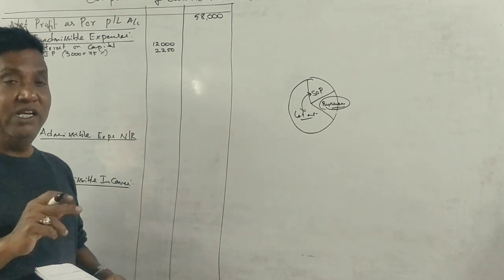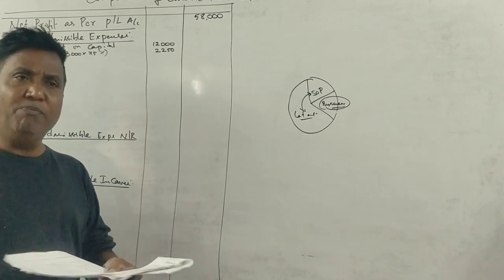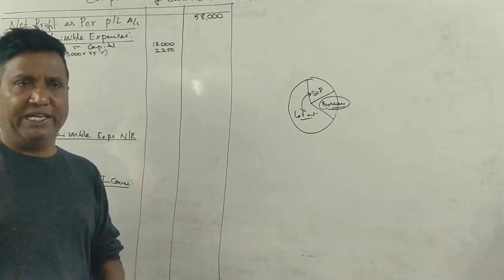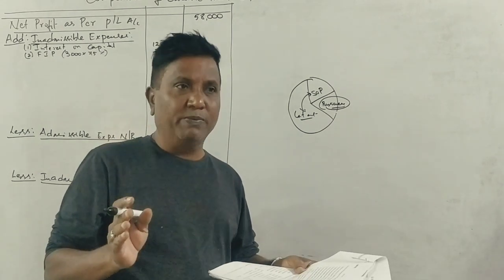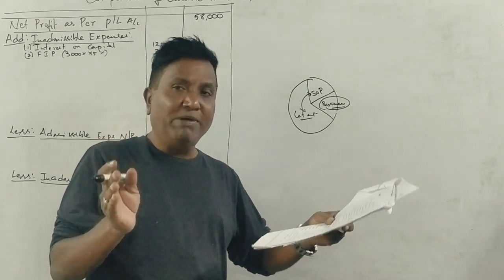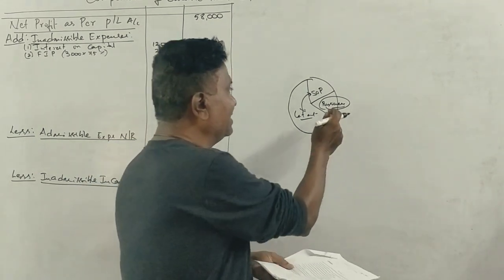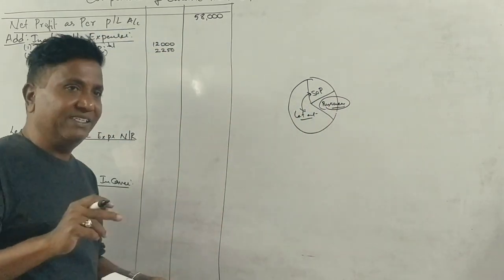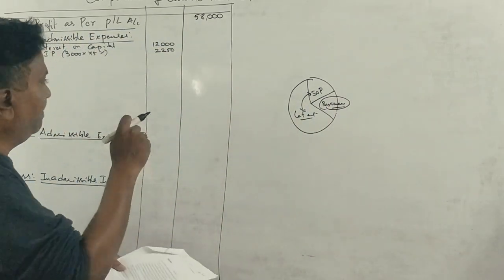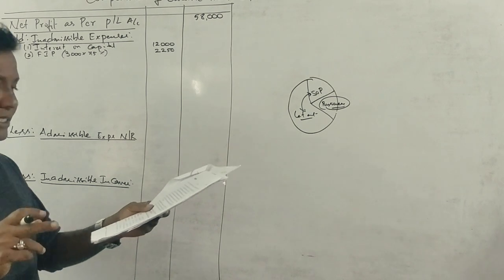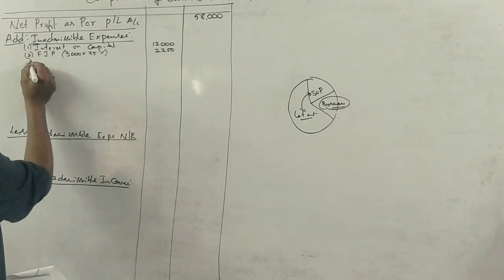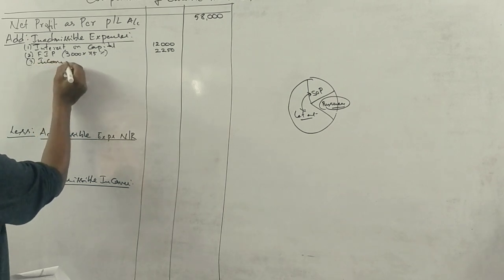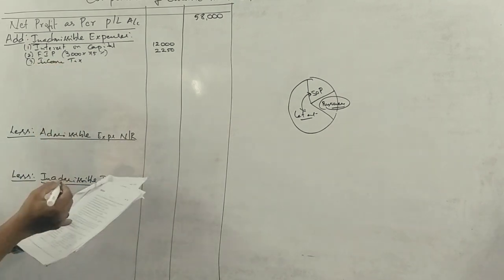Next, income tax. Income tax is not an admissible business expense. Moving on, fire insurance premium is Rs. 3,000, and business expenses are 25 percent of that amount. Next, income tax is Rs. 17,000, and in that, the business expense portion is Rs. 12,500.